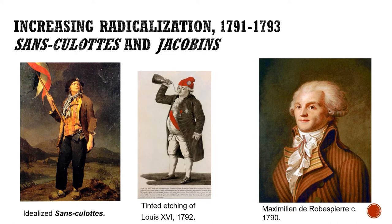They're known as the sans-culottes because of what they wore. Culottes are pants that only go to the knees, with tights underneath — worn by everyone above a certain social standing, including men of the upper middle class and deputies at the National Assembly. Working class people wore full-length pants, so they were without culottes. In French, sans-culottes means 'without culottes.' That's the basis of the name.